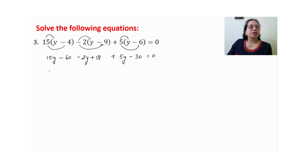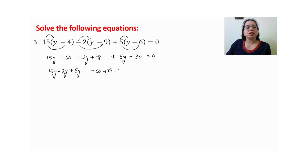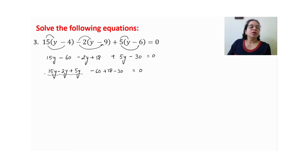अब सारे like terms पहले साथ में लिख लेंगे — space छोड़ कर: 15y minus 2y plus 5y. Coefficients add and subtract करेंगे according to sign: 15 minus 2 = 13, and 13 plus 5 = 18y. Constants: minus 30, plus 60, plus 18 — solve करेंगे।